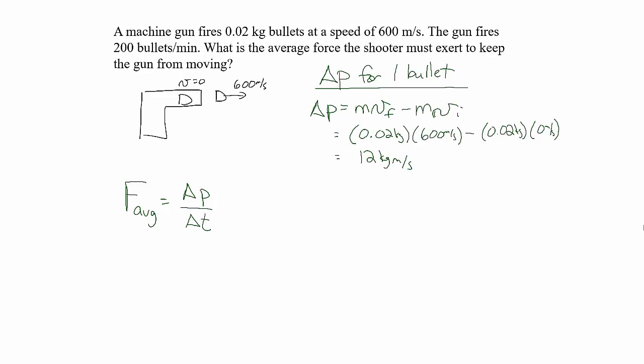The change in momentum for a single bullet would be the mass times the final velocity of the bullet minus the mass times the initial velocity of the bullet. The initial velocity of the bullet is 0 meters per second. The final velocity of the bullet is 600 meters per second. So the change in momentum of a single bullet is 12 kilogram meters per second.